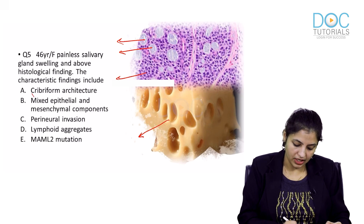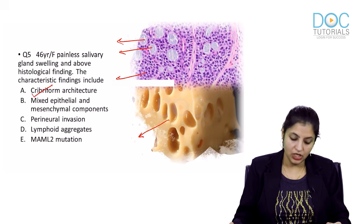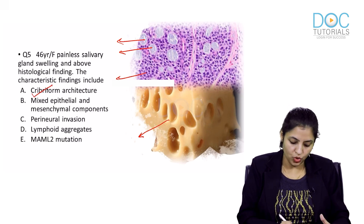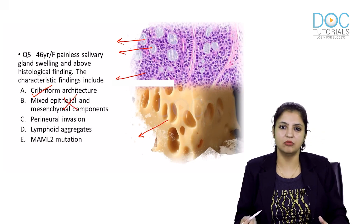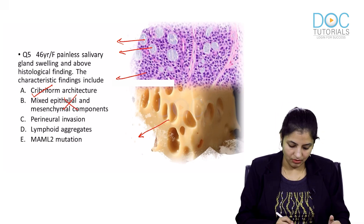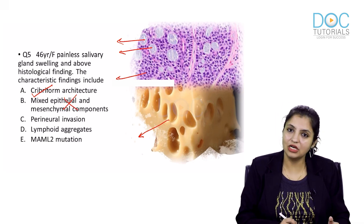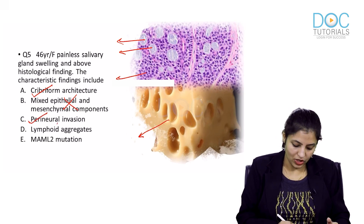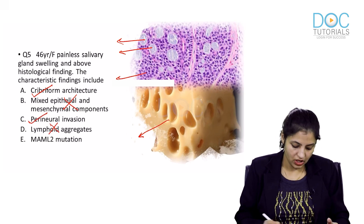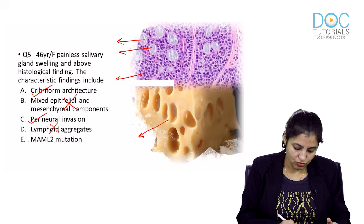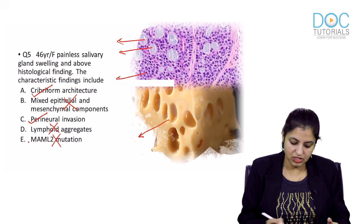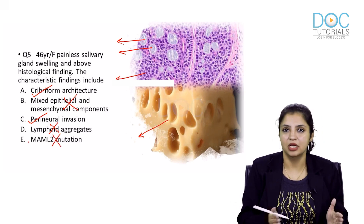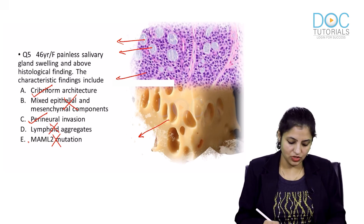The cribriform architecture is true. Mixed epithelial and mesenchyme — no, it is not epithelial and mesenchyme; it can be epithelial and myoepithelial, not mesenchyme. Perineural invasion is characteristic — yes. Lymphoid aggregates — no; lymphoid aggregates are a feature of Warthin tumour. MAML2 mutation is typically seen in mucoepidermoid carcinoma.